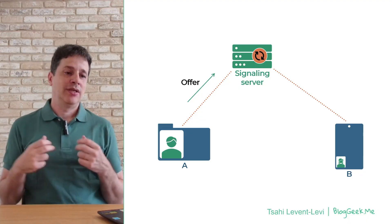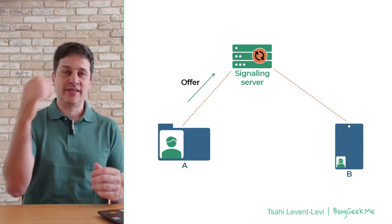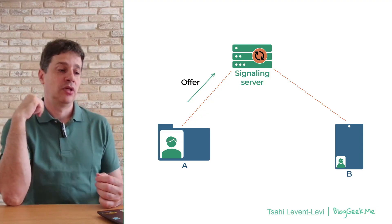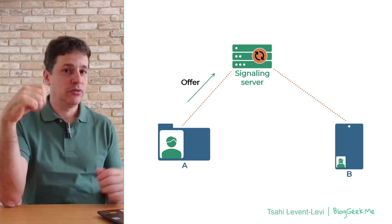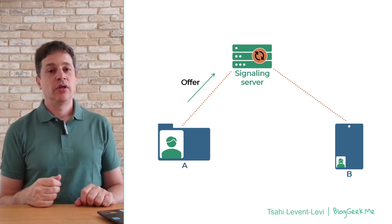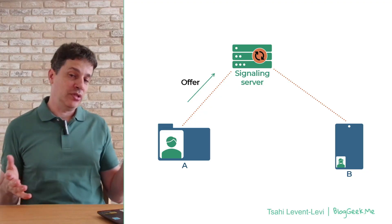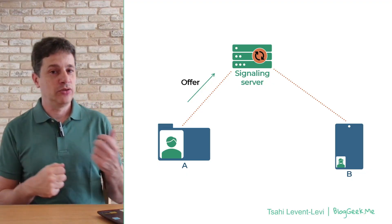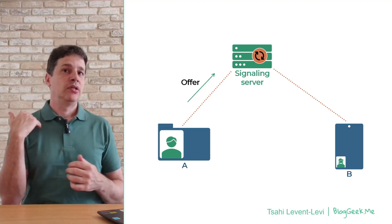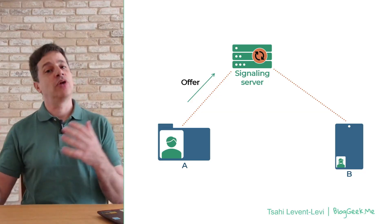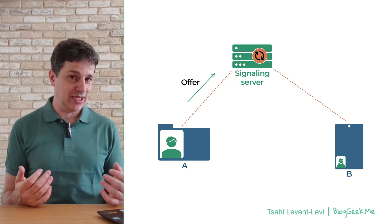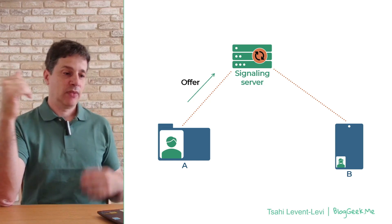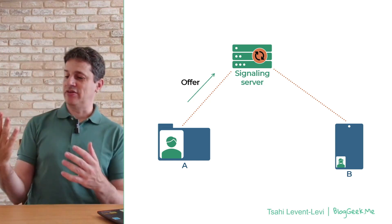Inside the SDP, A says things like: I want to do a video call with you, these are the ways I can do audio, these are the ways I can do video, these are the resolutions I support, and these are the codecs I use. Codecs are used for compressing audio and video — different codecs bring different compression ratios and different qualities. So we've got an offer being sent with the SDP.